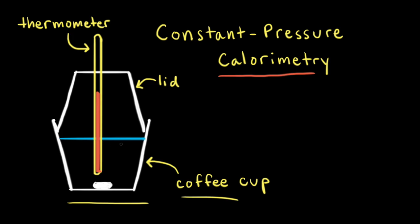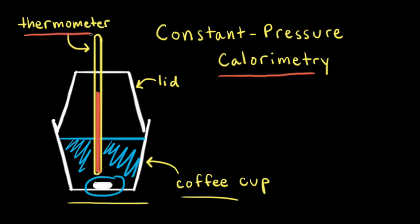Other components of our calorimeter include some water, a stir bar to stir up the water, and a thermometer to measure the temperature change of the water.